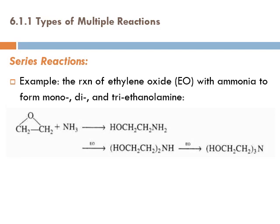As an example, this is the reaction of ethylene oxide with ammonia to form mono, di, and triethanolamine. The backbone of this reaction is the ammonia, and each time a hydrogen is replaced with a molecule based on ethylene oxide. Once this is formed, with the presence of extra ethylene oxide, another molecule can be added, and with really extra ethylene oxide, a third molecule can be added. These reactions happen one after another.